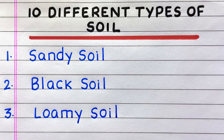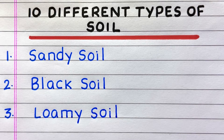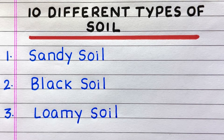The name of the first soil is sandy soil, second black soil, third loamy soil.